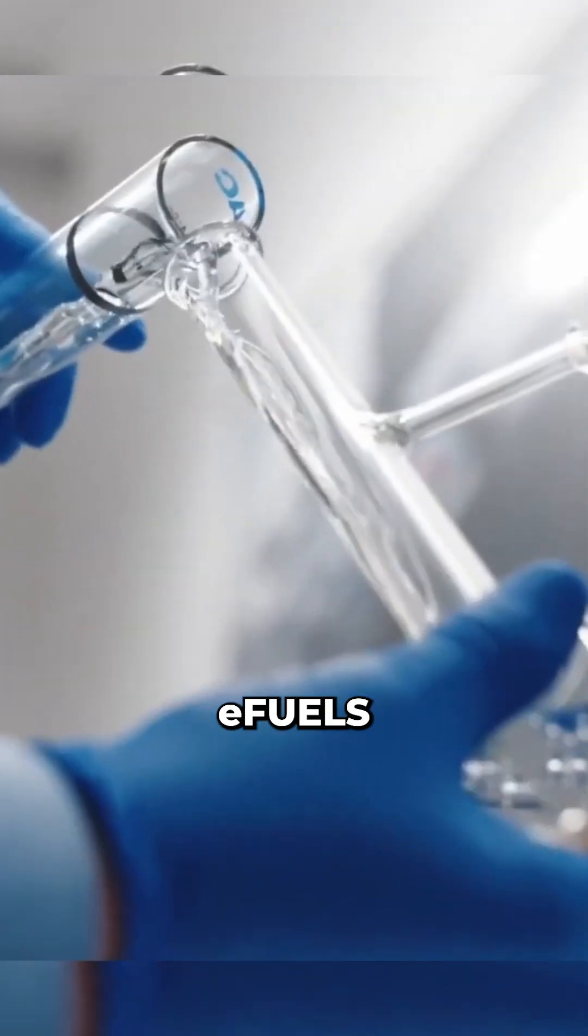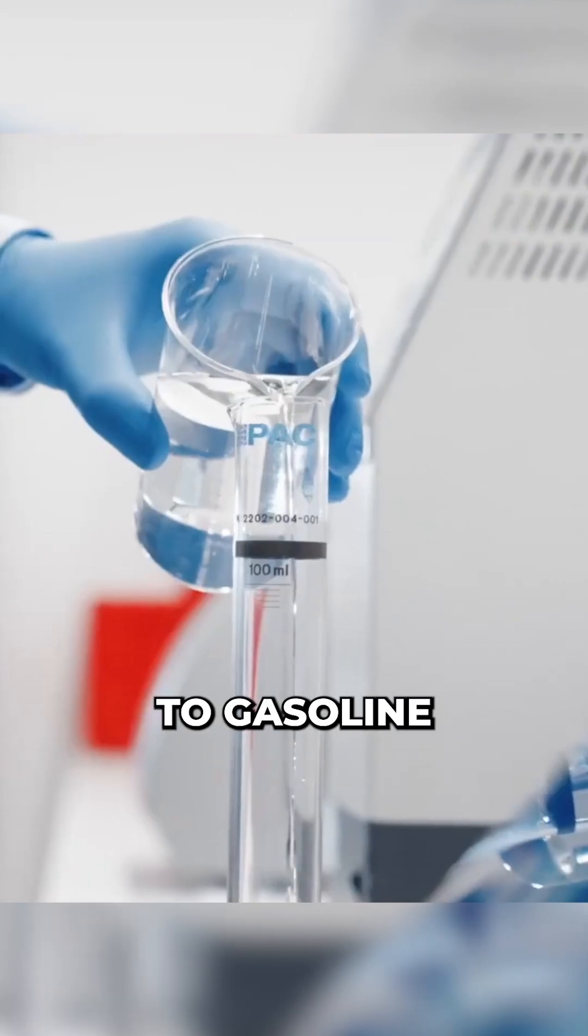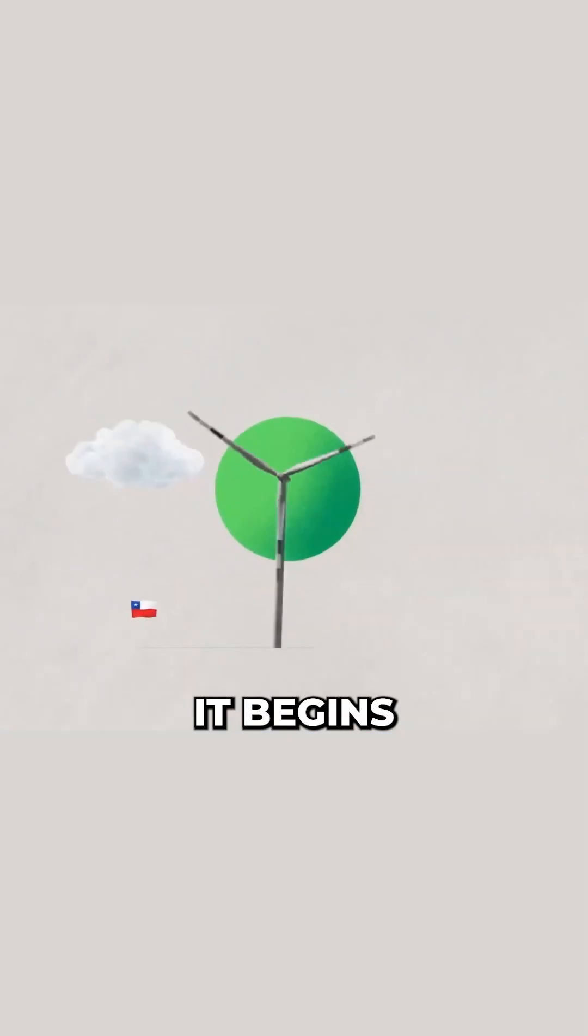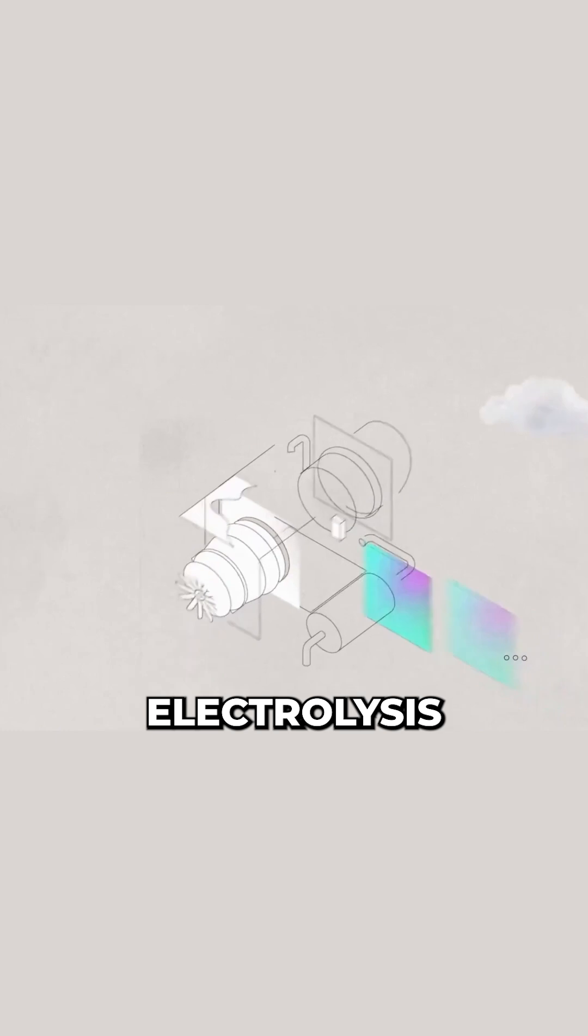Porsche is pioneering a synthetic e-fuel that's chemically identical to gasoline but cuts CO2 emissions by up to 85%. It begins with green hydrogen made by splitting water via renewable powered electrolysis.